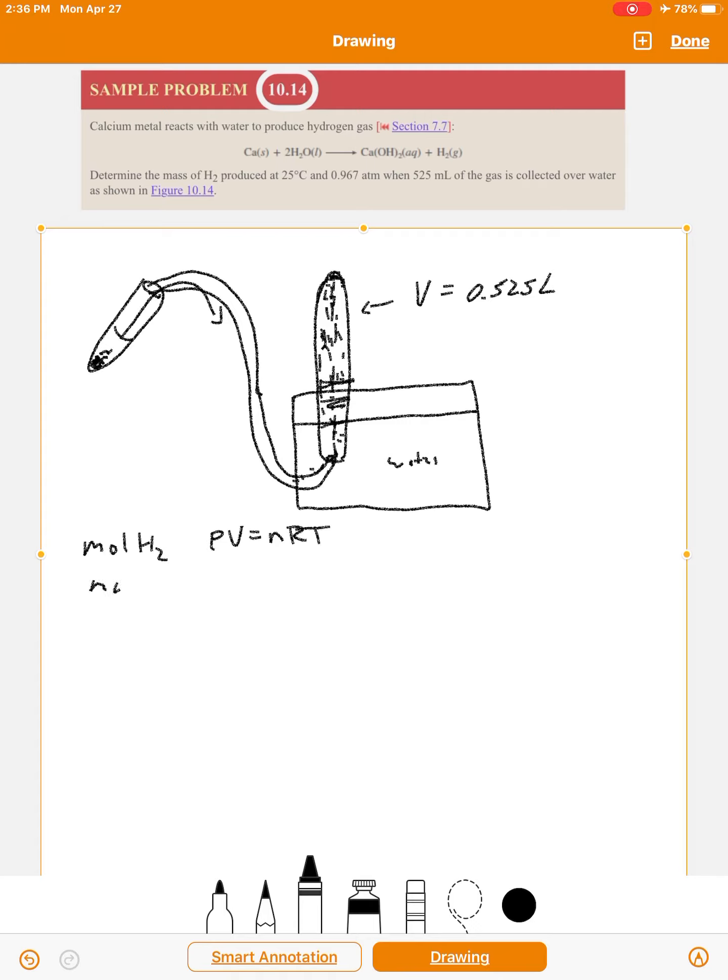And then just convert moles to mass. Okay. All right. So that's what we're going to do. So the issue here, however, is that when we use the ideal gas law, we can't use the 0.967 atmospheres.